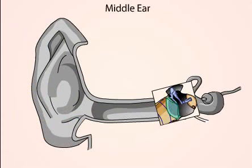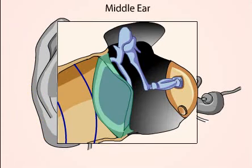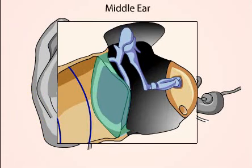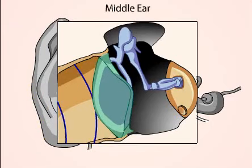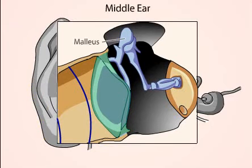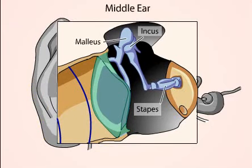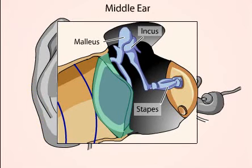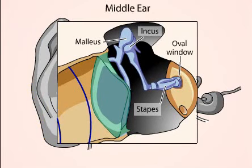From the ear canal, the sound waves vibrate the eardrum, which in turn vibrates three tiny bones in the middle ear: the malleus, incus, and stapes. The stapes vibrates a small membrane at the base of the cochlea, the oval window, which transmits amplified vibrational energy to the fluids of the cochlea.